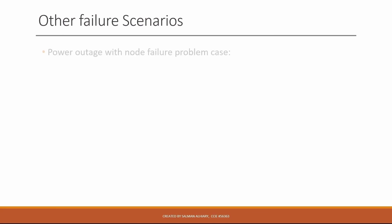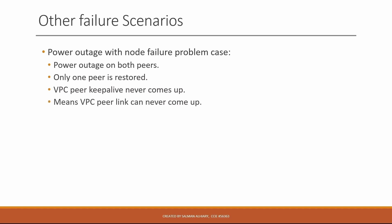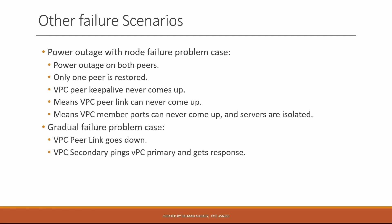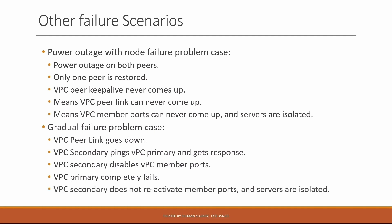Other failure scenarios include power outage. If a power outage hits both peers and only one peer is restored, the VPC peer keep-alive never comes up because the other peer is still down. This means the VPC peer link can never come up, so VPC member ports can never come up and servers are isolated. In the gradual failure scenario, the VPC peer link goes down, the secondary pings the primary and gets a response, and the secondary disables its VPC member ports. Then the VPC primary completely fails — an unlucky scenario — and the secondary does not reactivate its member ports, leaving servers isolated.